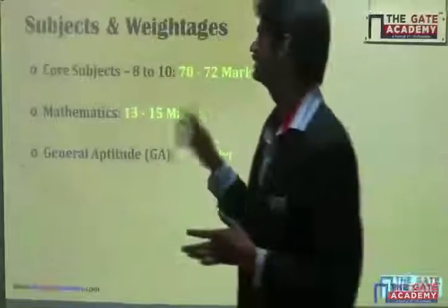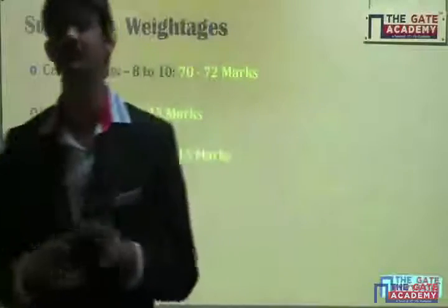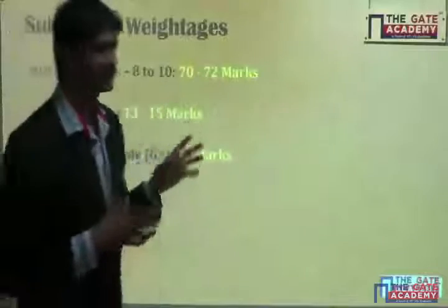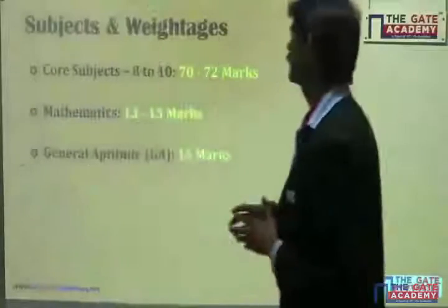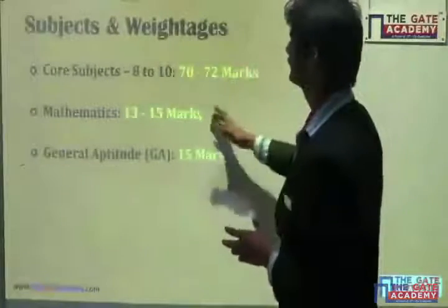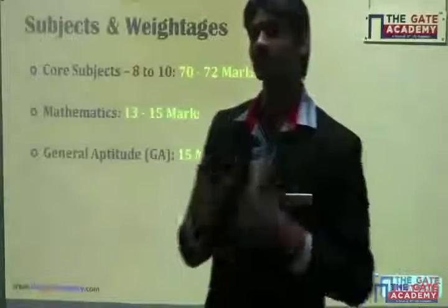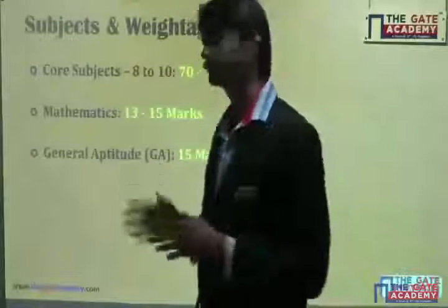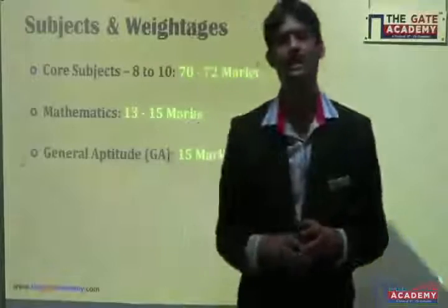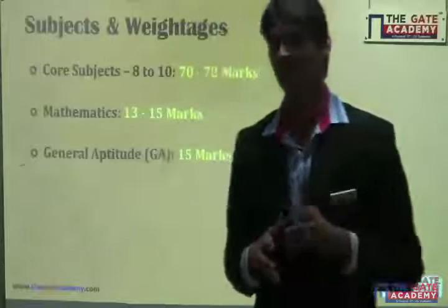Now, regarding the weightage for different subjects — I can divide all subjects into three categories: core subjects, mathematics, and aptitude. Aptitude accounts for 15 marks every year across all streams. That is fixed. And trust me, if you look at any GATE question paper, these 15 marks are very easy to score. Out of 15, it is very easy to get 13 or 14, and most people do score that.